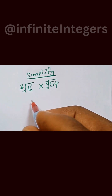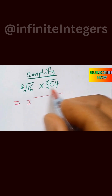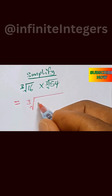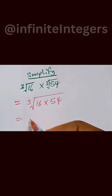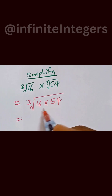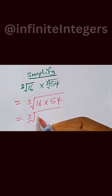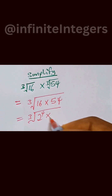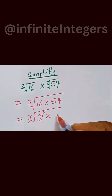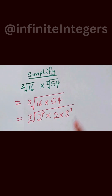To simplify, we have the cube root of 16 multiplied by 54. We can write cube root of 16 as 2 raised to the power 4, and 54 can be written as 2 multiplied by 3 raised to the power 3.